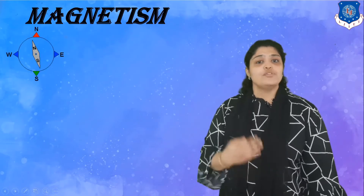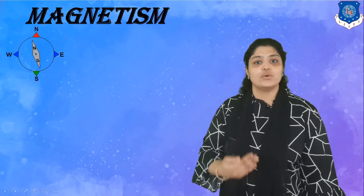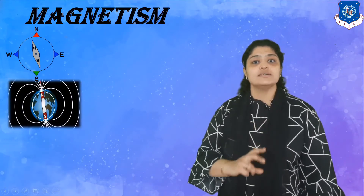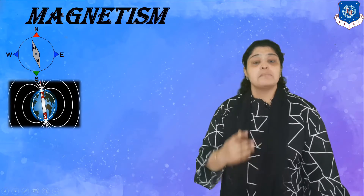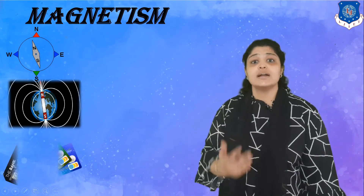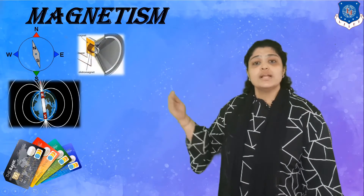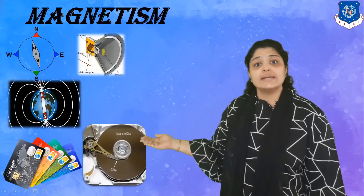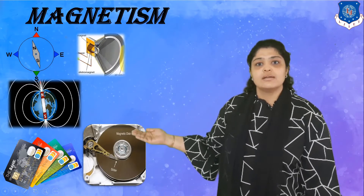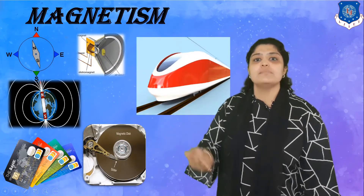Magnetism. Have you ever noticed the magnetic compass needle always points in the north direction? This is because the north and the south pole of the earth attract each other. Magnetism finds its application in daily routine, starting from the debit and credit cards we use, to loudspeakers, the magnetic hard disks which use magnetism to store data, and also in high speed trains like a maglev train.